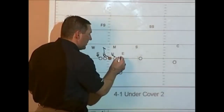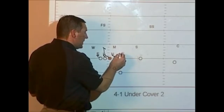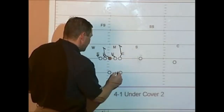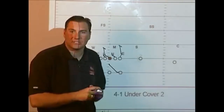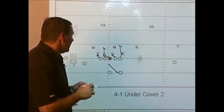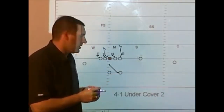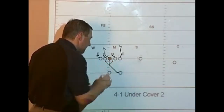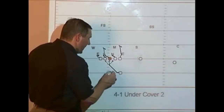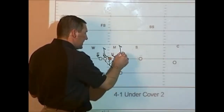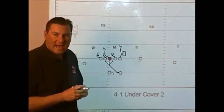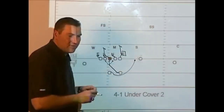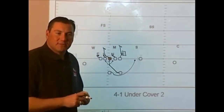The backside tackle can make a man call, at which point he will block through the backside defensive end up to the Sam linebacker. Our tailback's aiming point is going to be the outside leg of the play-side guard. He will then read the first down lineman off the center for his zone block. Our quarterback will open up and read the backside C-gap defender. In this case it appears to be the end. As he sees that end is blocked, it will be a give, and the quarterback will hand the ball off to the tailback and then carry out his fake on the outside.